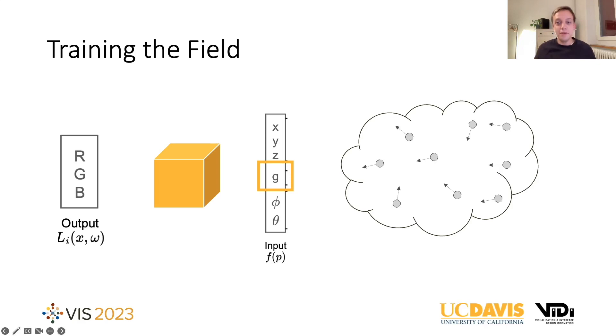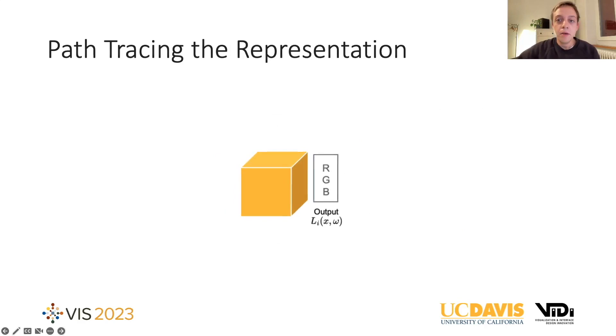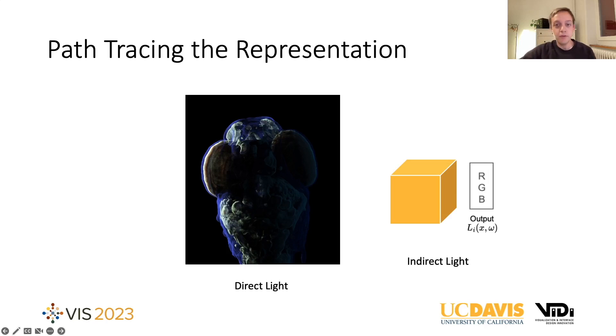So now that we have the trained model, we can use this information about indirect radiance in a rendering application. So for our proof of concept implementation, we have a path tracer and we trace the first hit that we can see here on the left, direct light contribution as always. And instead of extending paths beyond this first hit, we rely on the photon field shown on the right to provide an estimate of global illumination.